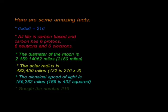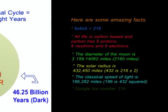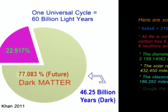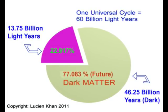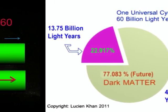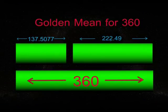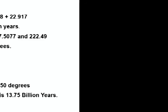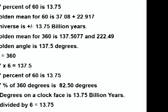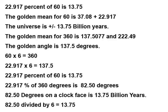To recap: 22.917% of 60 is 13.75. The golden mean for 60 is 37.08 plus 22.917. The estimated age of the universe is 13.75 billion years. And physicists claim we only see roughly 25% of the universe. Pause this video here and study the numbers.